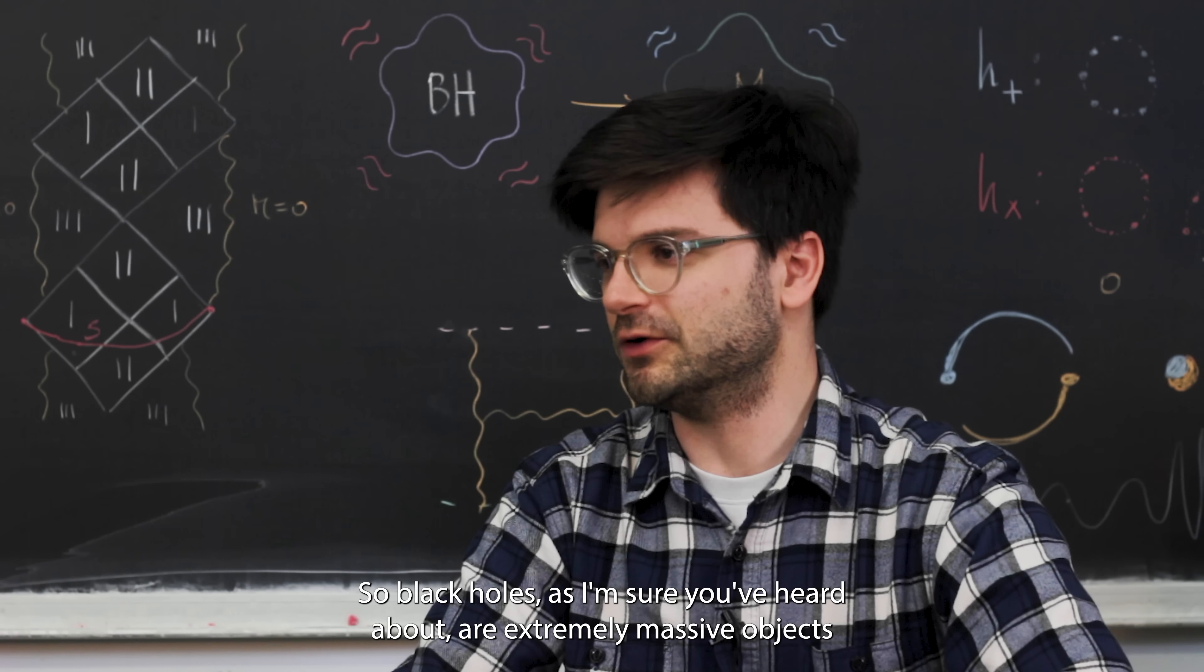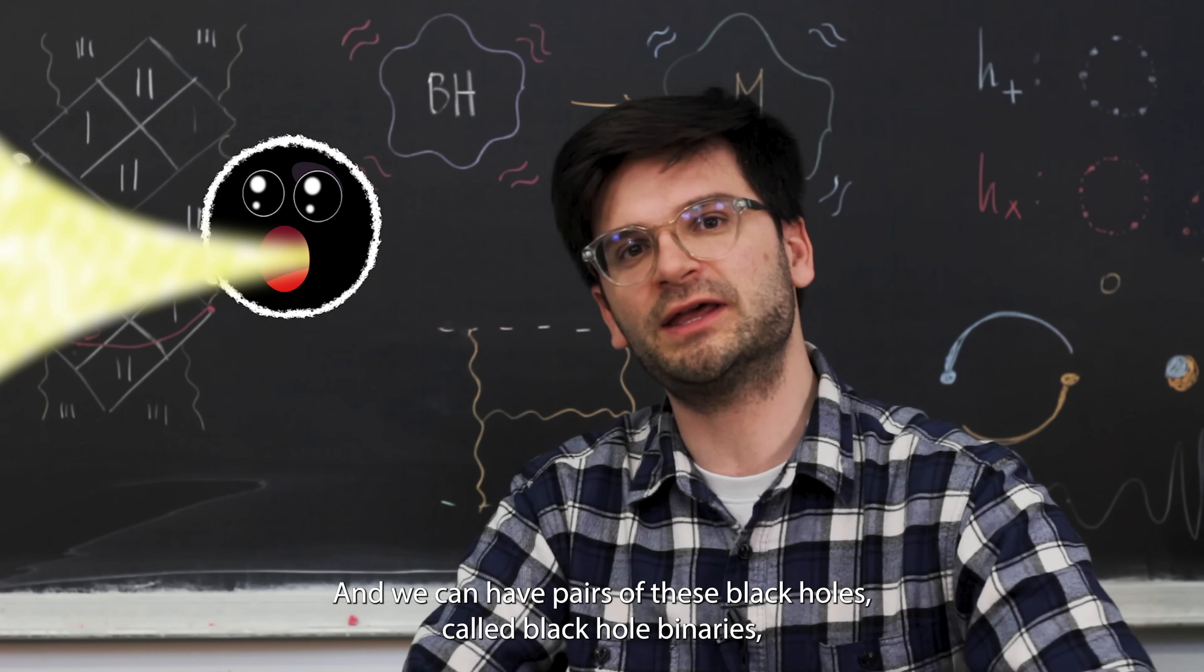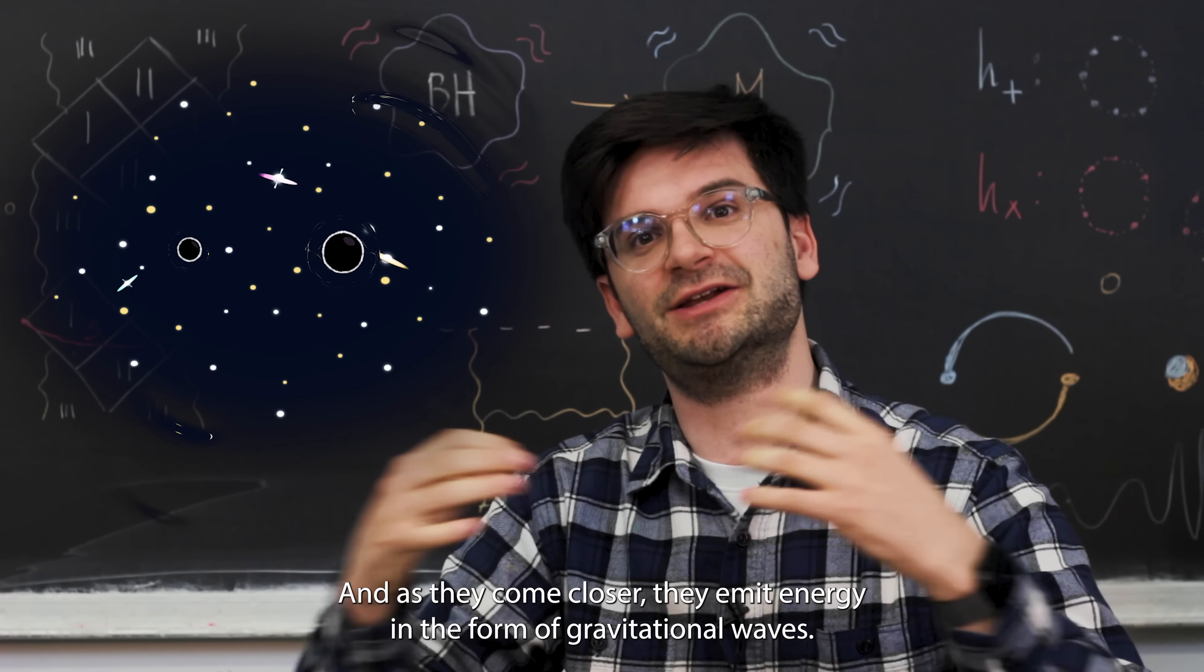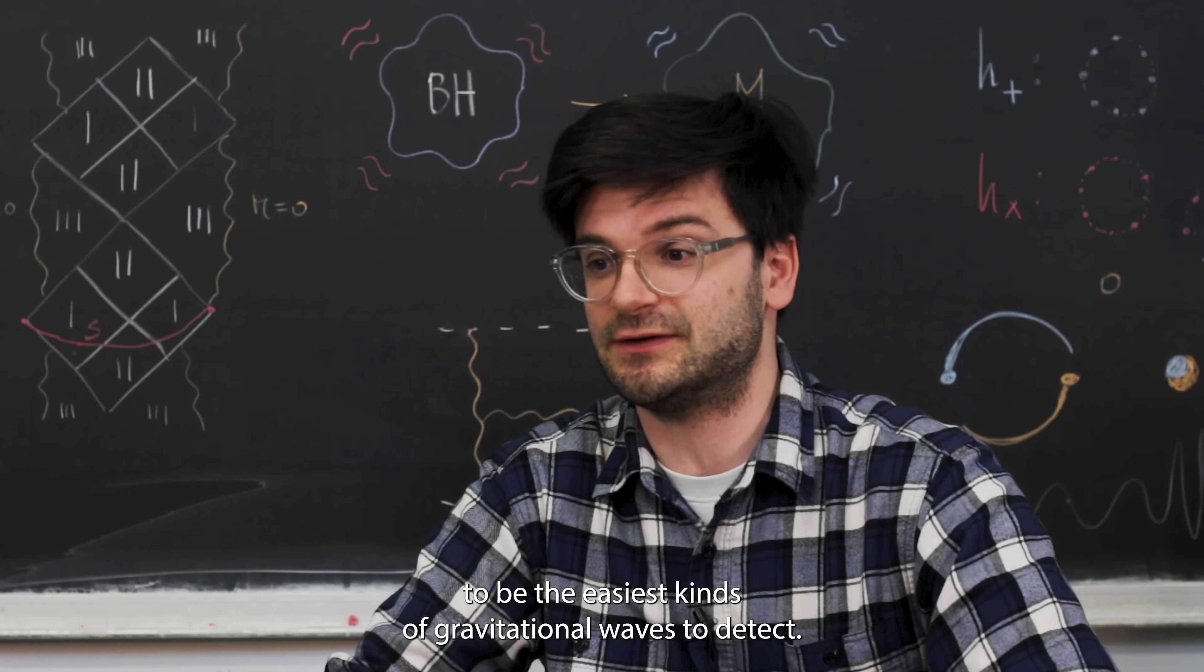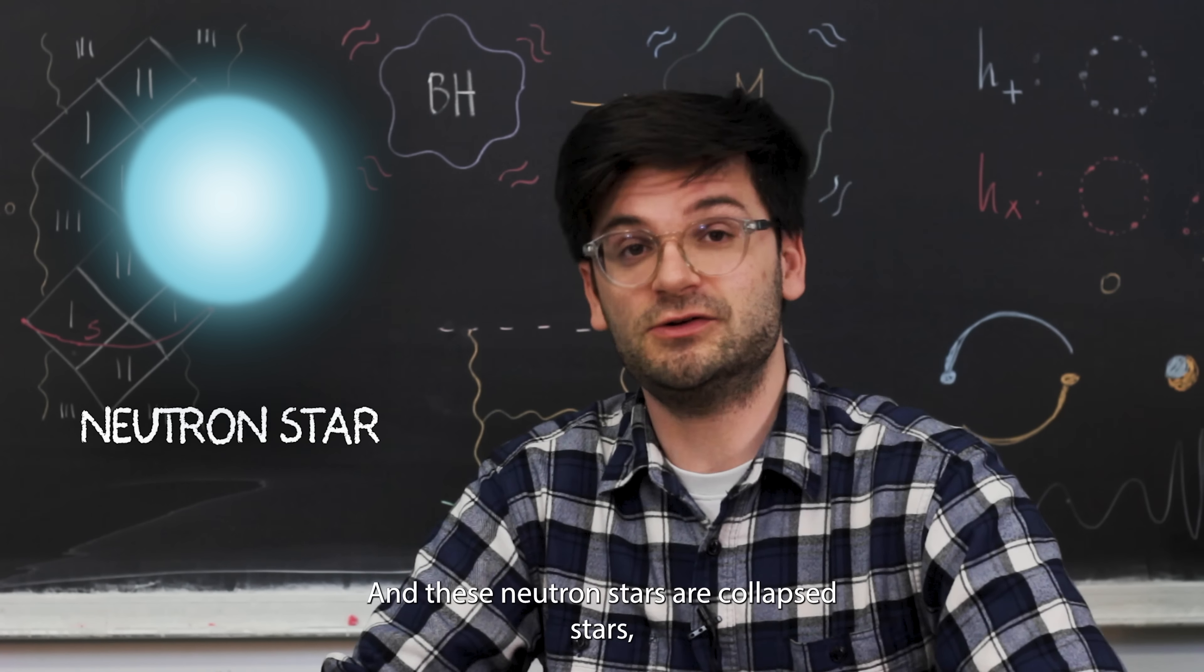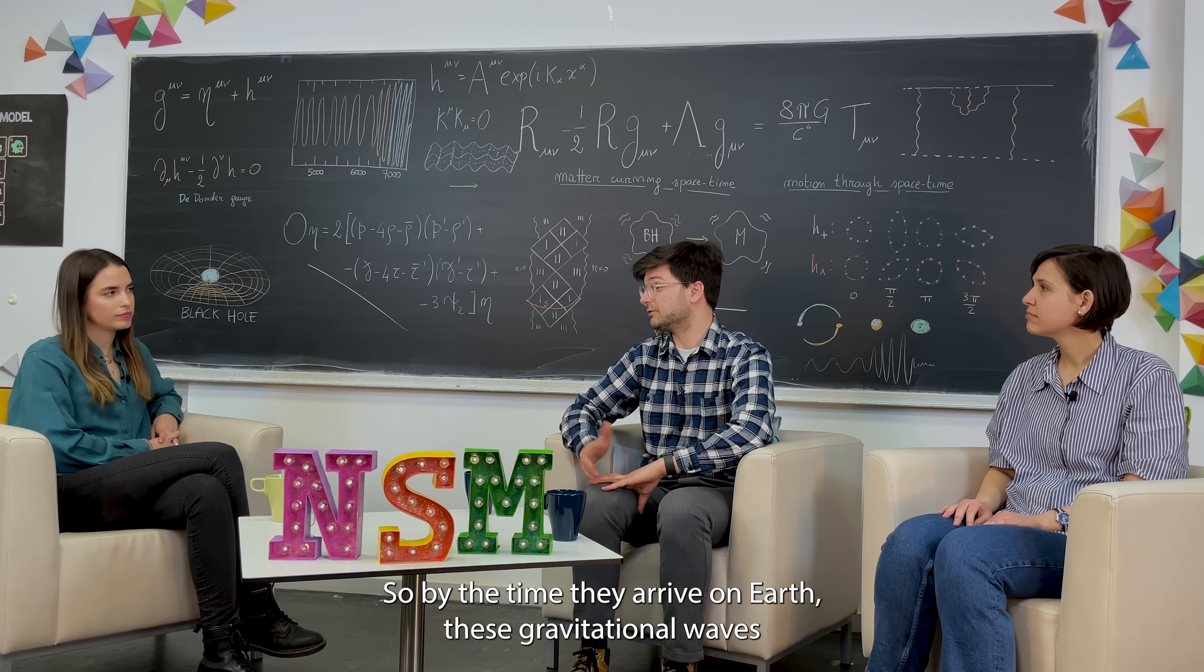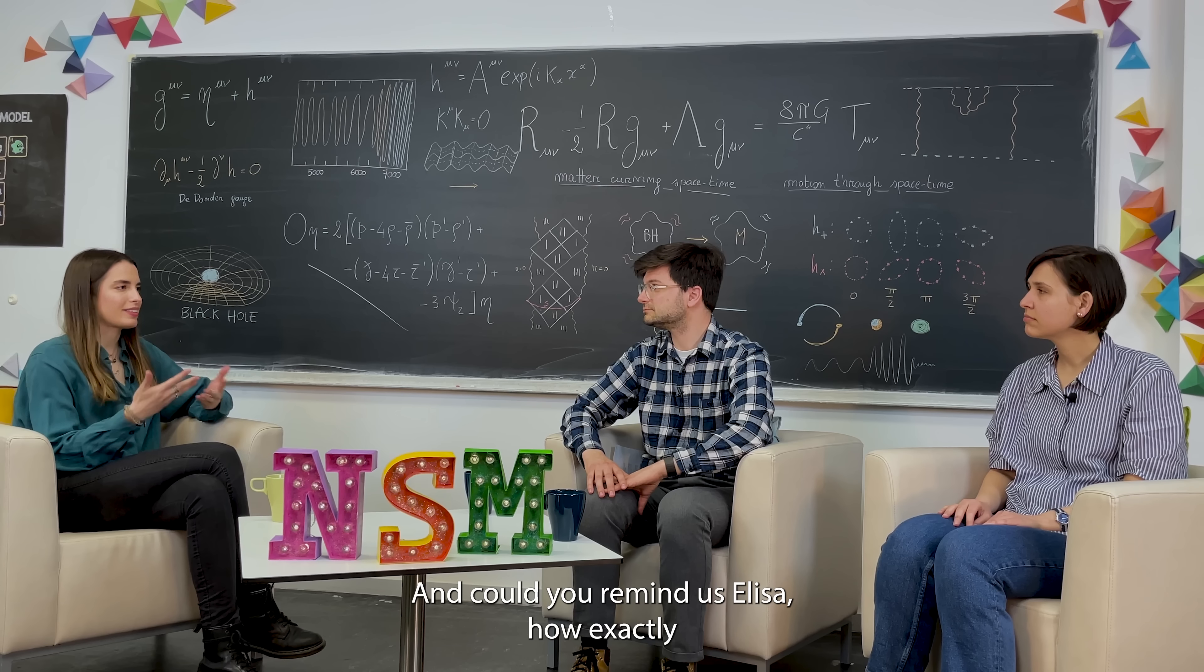You just mentioned black holes and neutron stars, but what are these objects in detail? Black holes, as I'm sure you've heard about, are extremely massive objects where the gravity is so strong that even light ends up falling into them. We can have pairs of these black holes, called black hole binaries, which orbit each other. As they come closer, they emit energy in the form of gravitational waves. These tend to be the easiest kinds of gravitational waves to detect. But we can also have pairs of massive objects called neutron stars. These neutron stars are collapsed stars whose mass is comparable to that of the sun, but whose size tends to be compressed into radii of roughly tens of kilometers.